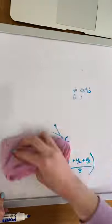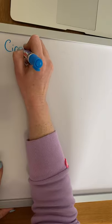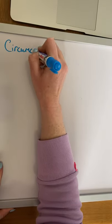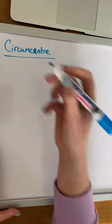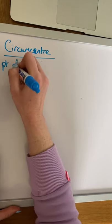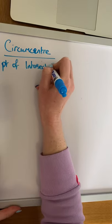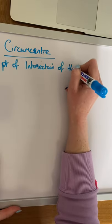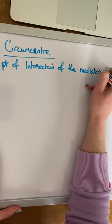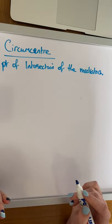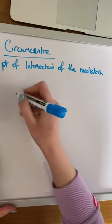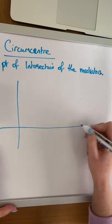The next one we're going to look at is the circumcenter of a triangle. The circumcenter is the point of intersection of the mediators — remember, the mediators are the perpendicular bisectors of the sides of a triangle. Again, we need to be able to find this both graphically and algebraically.